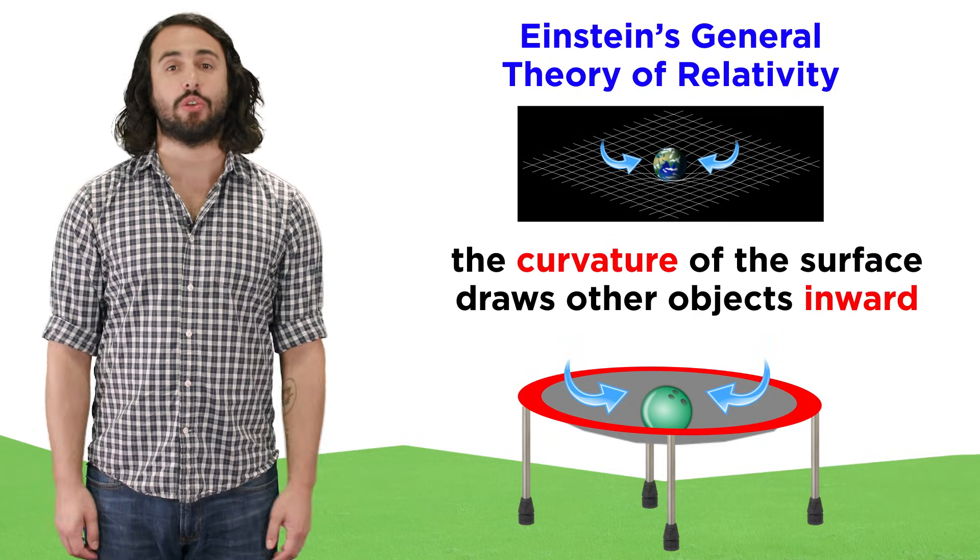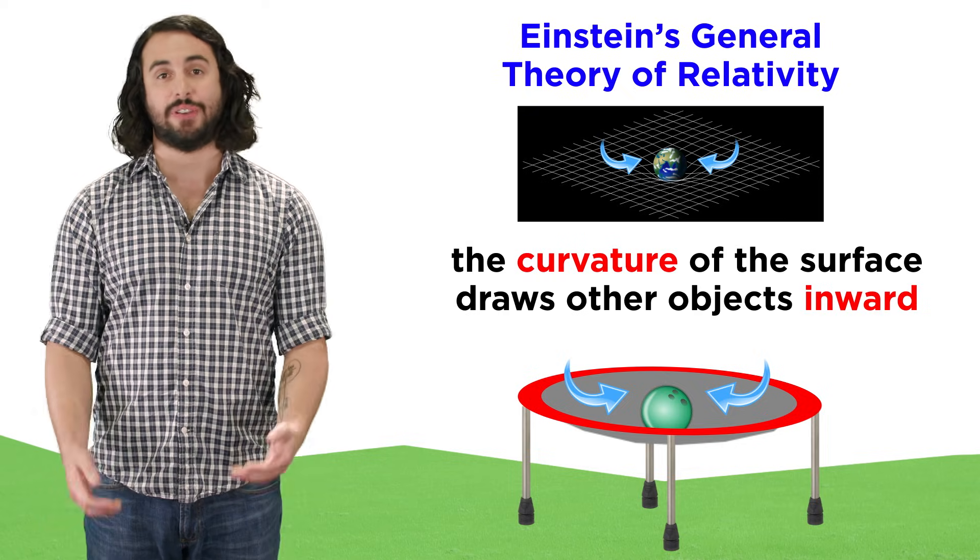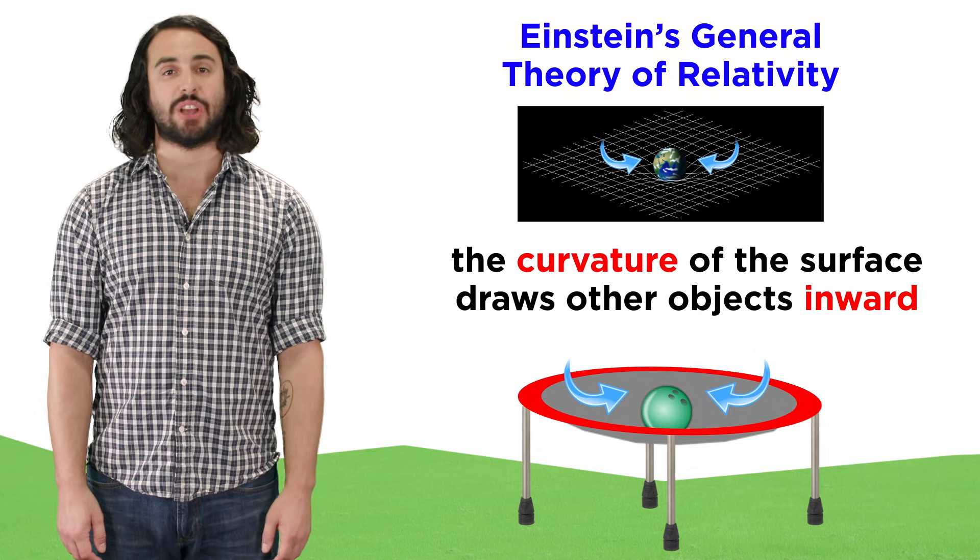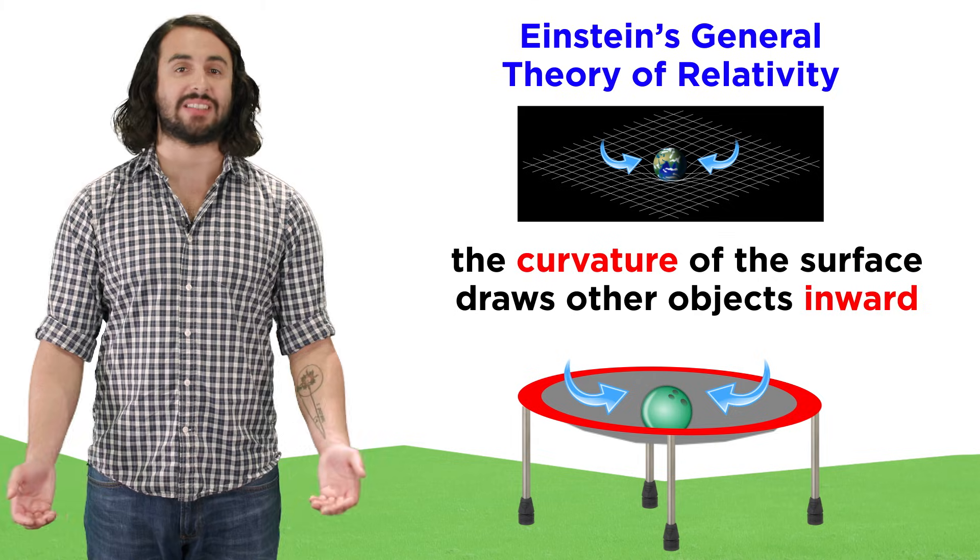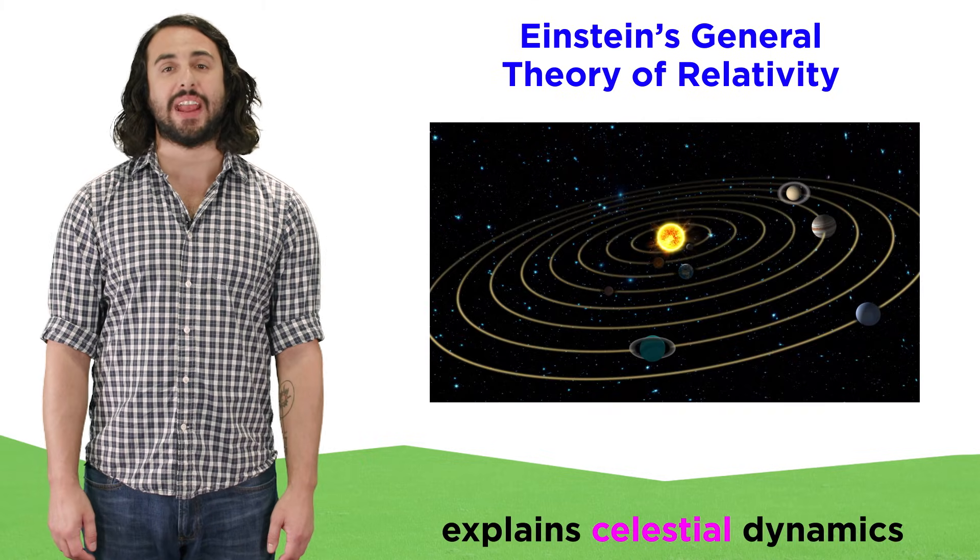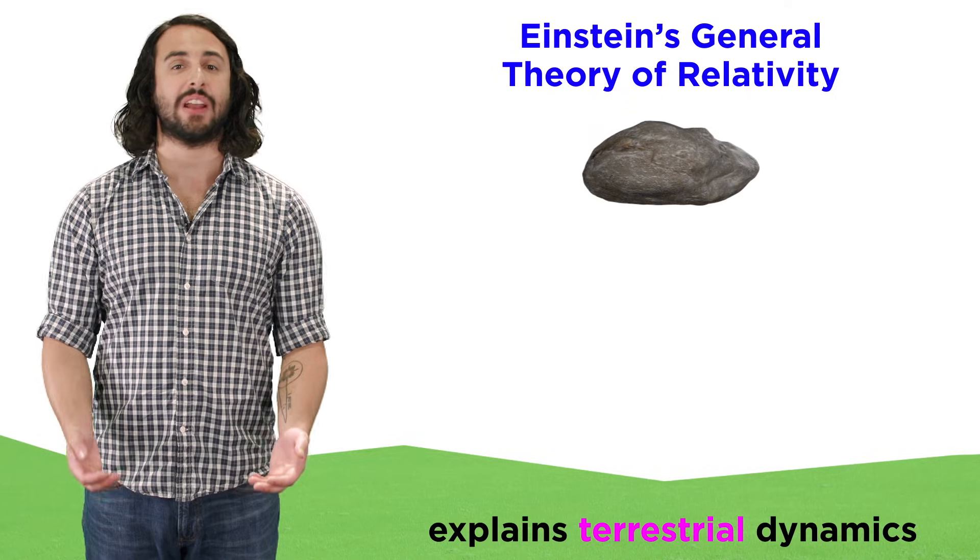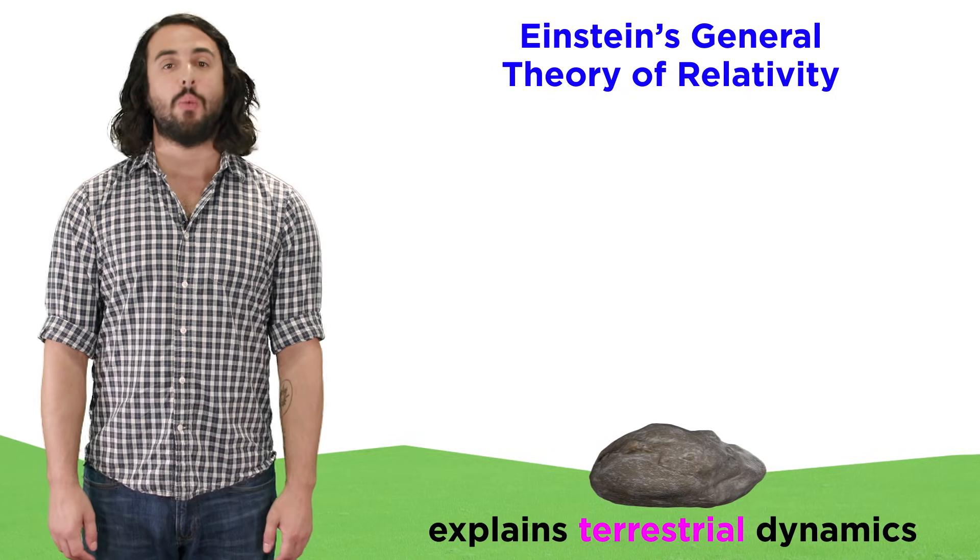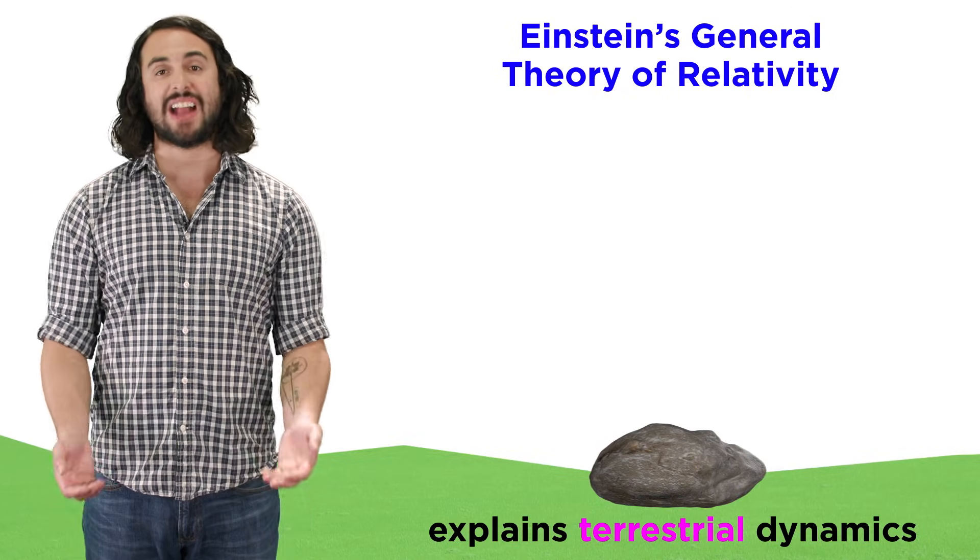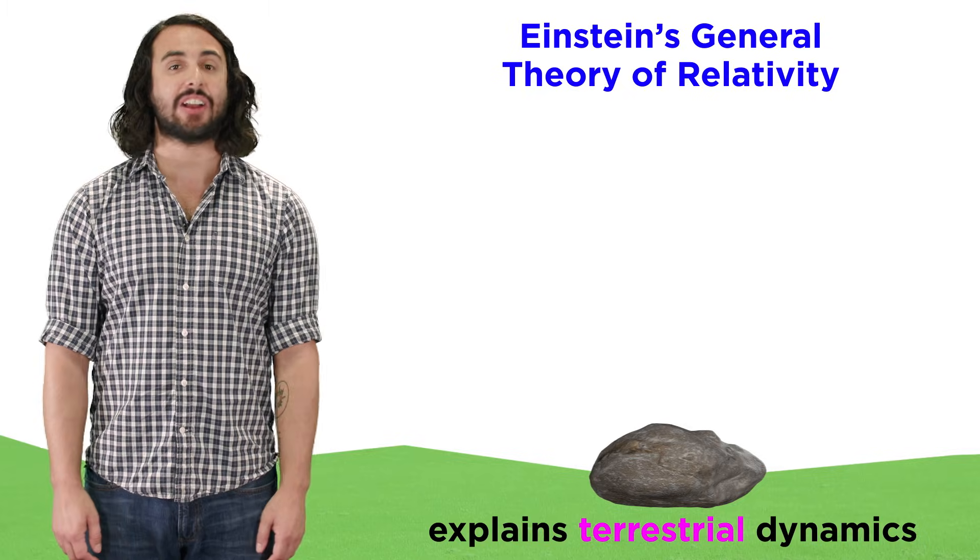This curvature creates what we know of as gravity, being that massive objects tend to fall towards more massive objects, and this explains the orbits of the planets around the sun, as well as the falling of objects towards earth, without having to resort to a magical field force imparting action at a distance.